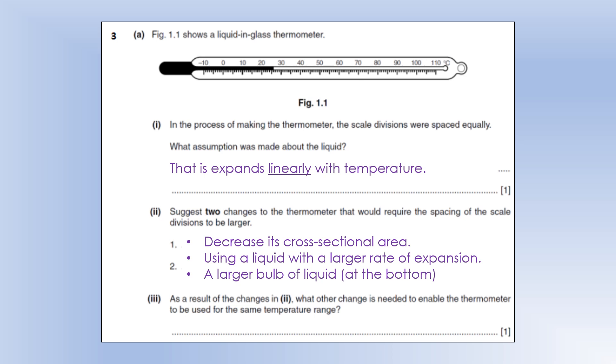As a result of the changes, what are the changes needed to enable the thermometer to be used for the same temperature range, so essentially to measure the same maximum minimum values? Well, it would need to be longer. So if we want to increase the sensitivity and keep the range the same for a thermometer, that means making it longer.